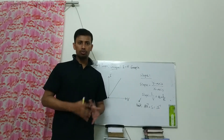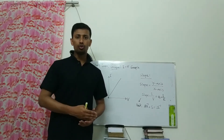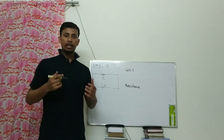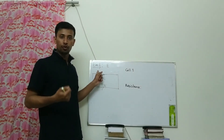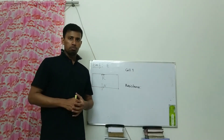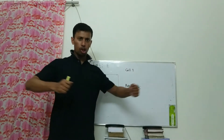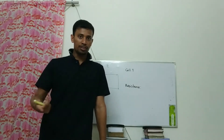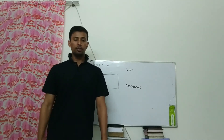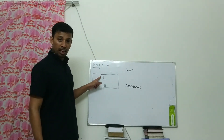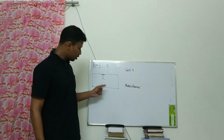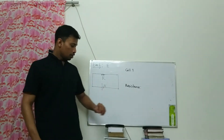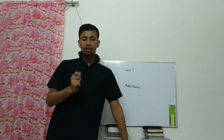I will give you a problem-based MCQ as homework and will give the solution in the next lecture. Now let's discuss EMF. The full form of EMF is electromotive force. We studied it at secondary level and already memorized the long definition. We have a circuit here with an external resistance R, a cell, and the power of the cell is denoted as EMF, capital E.